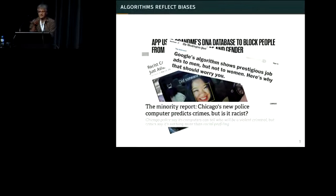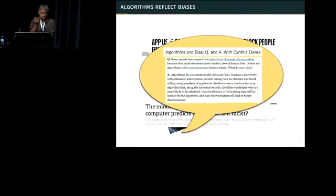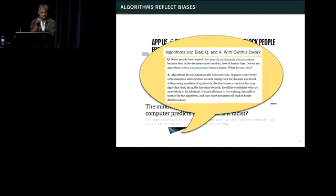These are some of the many examples — and sadly there are many more I could give you — of cases where fully automated algorithms making decisions about certain tasks are doing things that might be considered biased in some form. If you don't believe me, you should talk to Cynthia Dwork, a very famous researcher in this area, who just had an interview with the New York Times yesterday. The very first question she was asked was can algorithms eliminate discrimination, and she said no, they can't. In fact, they could amplify biases inherent in their training and the people who use them.